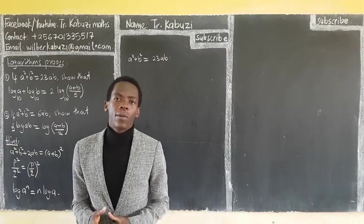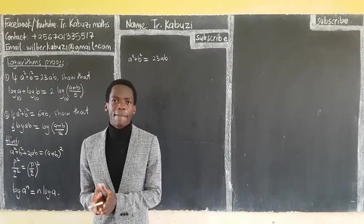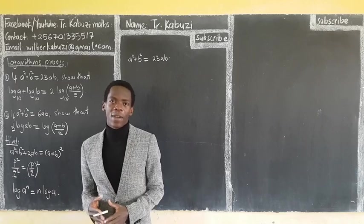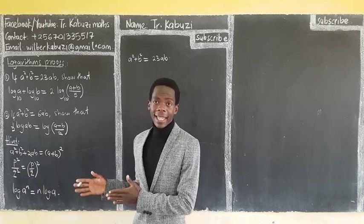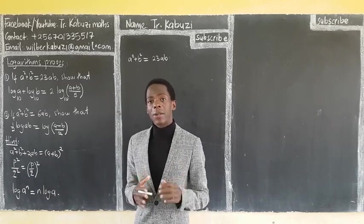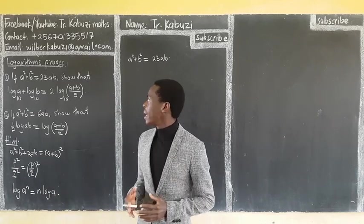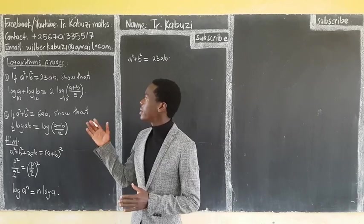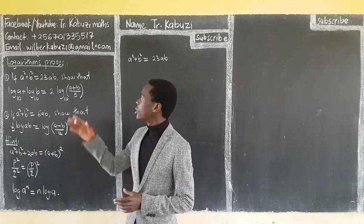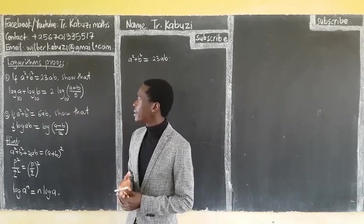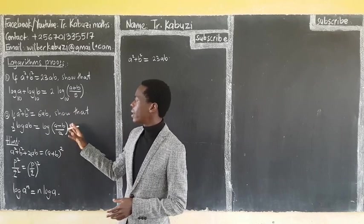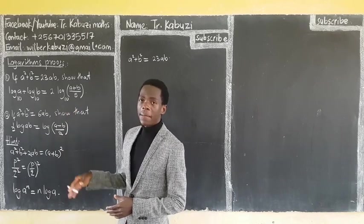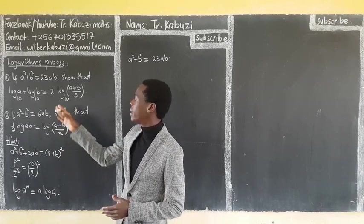Now guys, in this proof, we are going to see more examples. Now we have this. Let us see how we go about this proof. If A squared plus B squared is different than that, show that this is this. And now, this is another type, which is having the same idea with this.